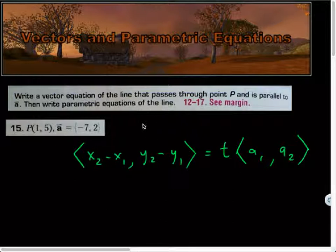So in our situation, I'll call the point X, Y. I'll refer to that as my X2, Y2. The point here will be my X1, Y1, and then the coordinates of vector A will be A1, A2.